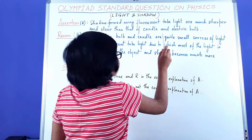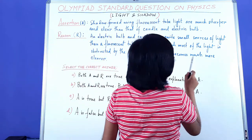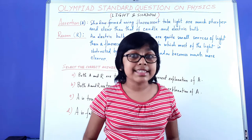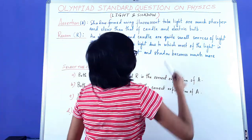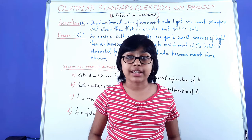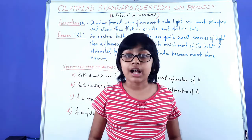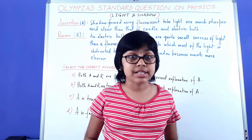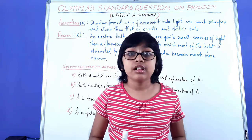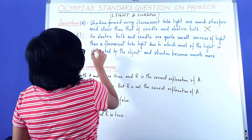The reason states: An electric bulb and candle are quite small sources of light compared to a fluorescent tube light, due to which most of the light is obstructed by the object and the shadow becomes much clearer. We can understand that the assertion is wrong, because fluorescent tube lights are quite large sources of light, so most of the light is not obstructed by an object. In the case of candles and electric bulbs, their shadows are quite clear because they are small sources of light, and most of the light is obstructed by the object, making the shadow look very clear on the screen. So the assertion is wrong and the reason is correct.